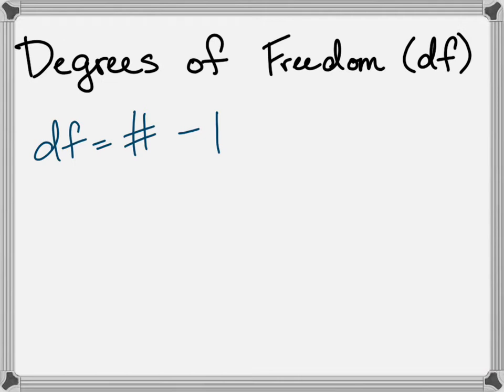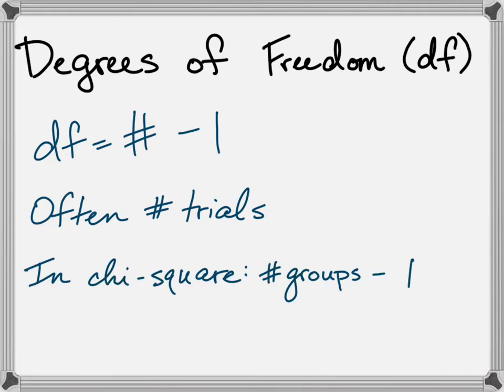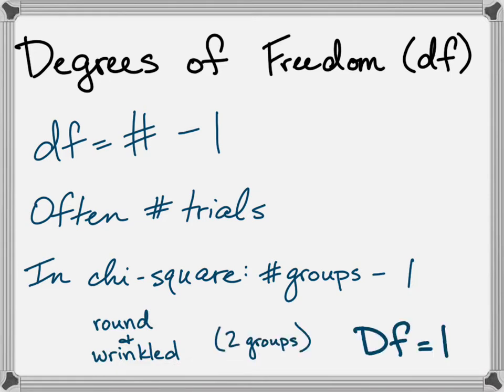Often, degrees of freedom takes sample size into account, but since E already factors in how many samples were counted, in chi-square, we look at the number of groups minus one. So our degrees of freedom here for round and wrinkled two groups is one.